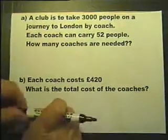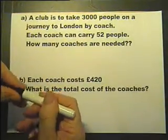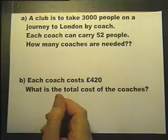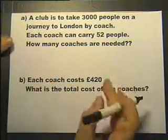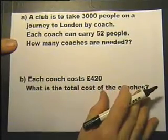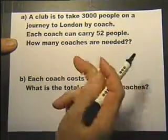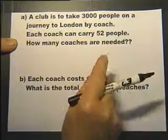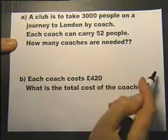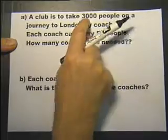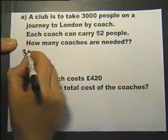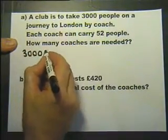A club is to take 3,000 people on a journey to London. That's a lot of people. Each coach can carry 52 people. How many coaches are needed? I don't know why I put two question marks there. Really it's saying how many 52s are there in 3,000?